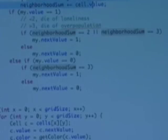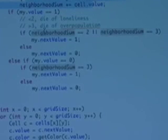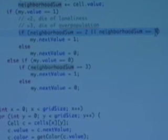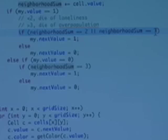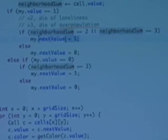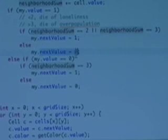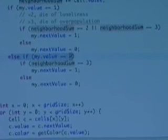If my value is 1, then if the neighborhood sum is 2 or 3, so if there are two things around me or three, then my next value, the value that I will be in the future, is going to be 1. I'm going to stay alive. Otherwise I'm going to die, value 0, my next value is 0.